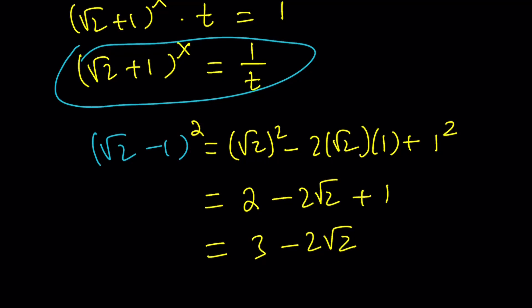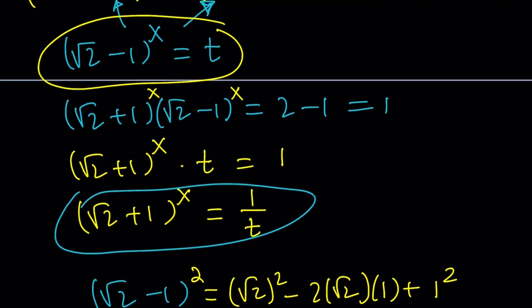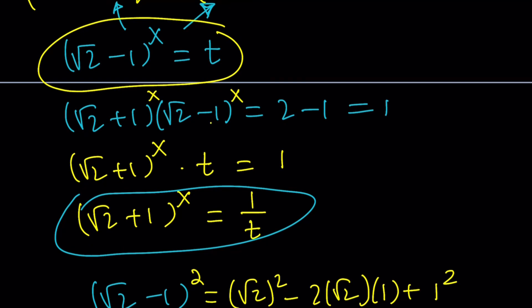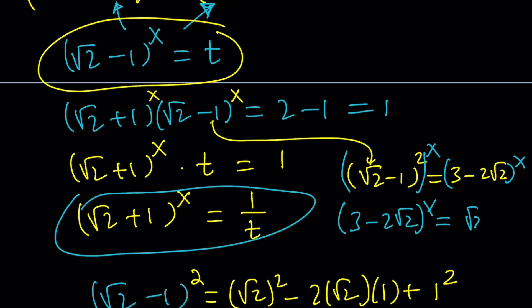Now, what happens if you raise it to the power x? So this is what we need to work on. Well, if you just raise both sides to the power x, then you're going to get the answer. So (√2-1)² is 3-2√2, and let's raise both sides to the power x. Then we get (3-2√2)^x = (√2-1)^(2x) which can also be written as ((√2-1)^x)².